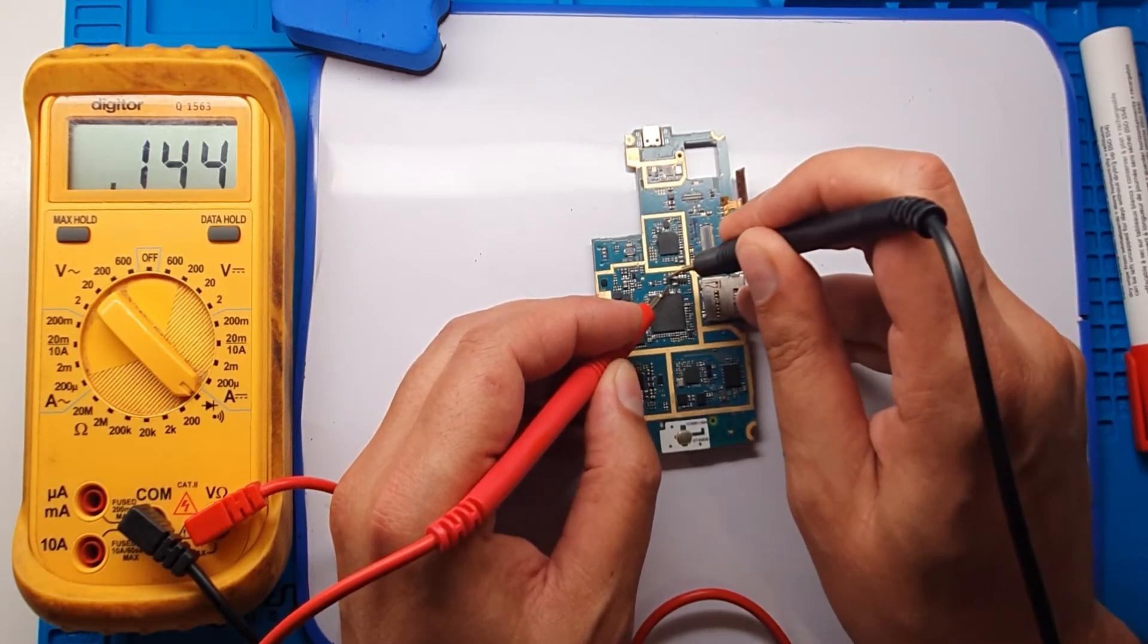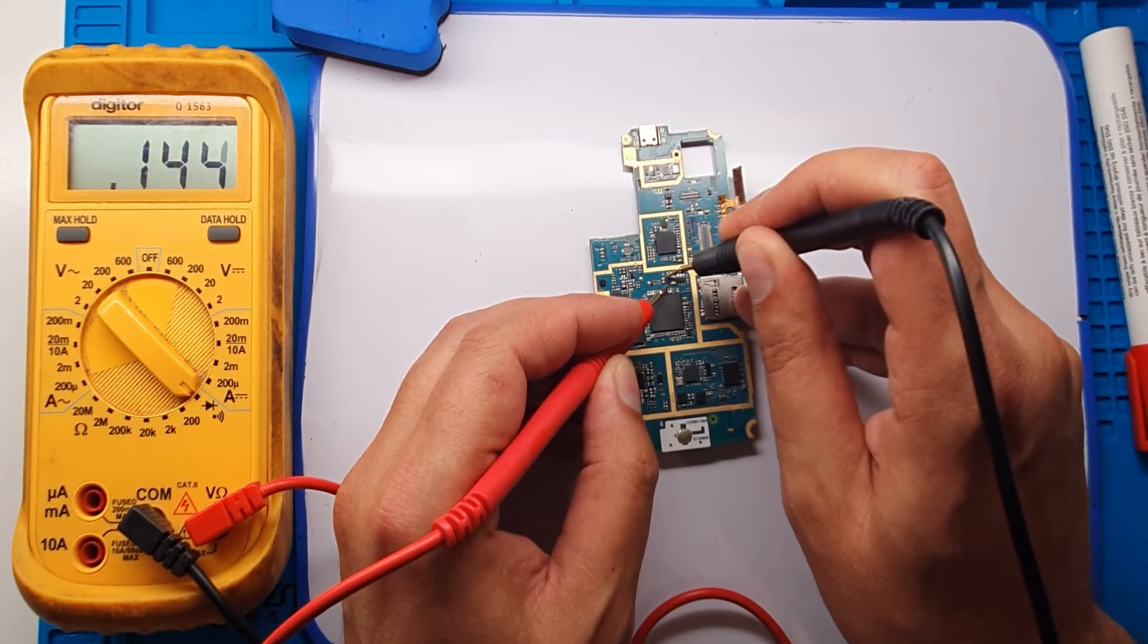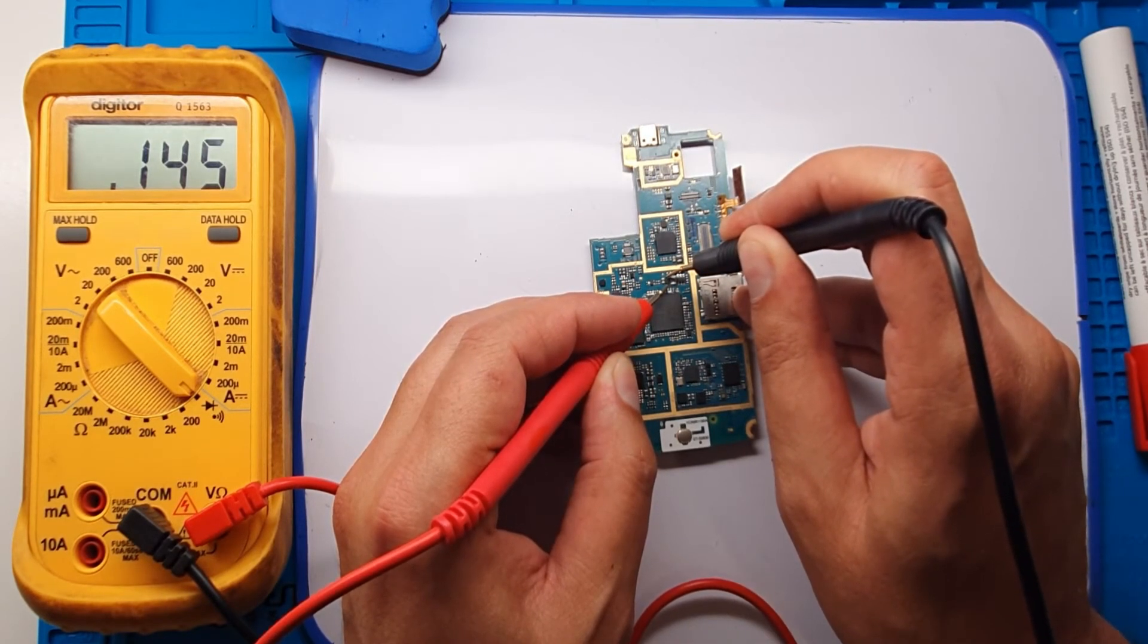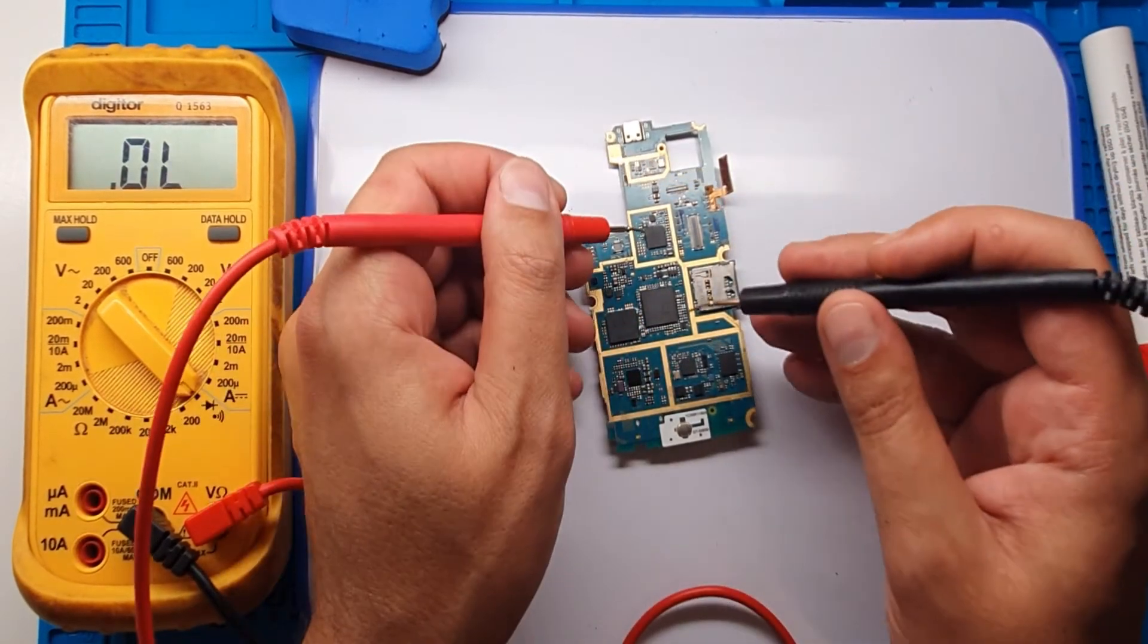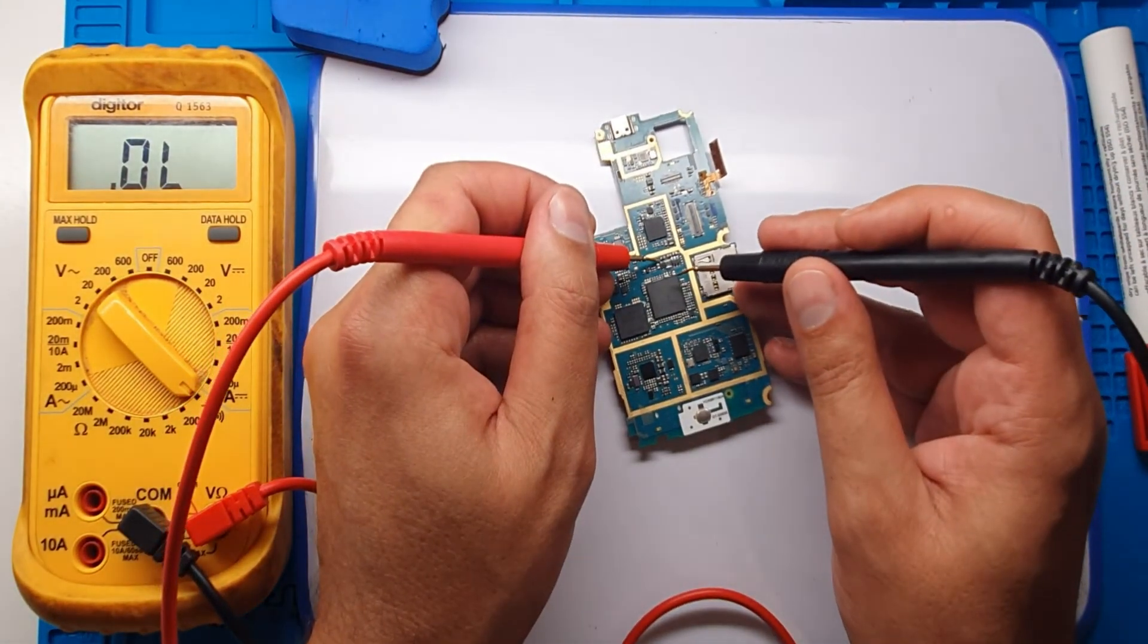This is very close to the other component. You see it's showing a digit number. But when you swap it, it is showing me the OL.